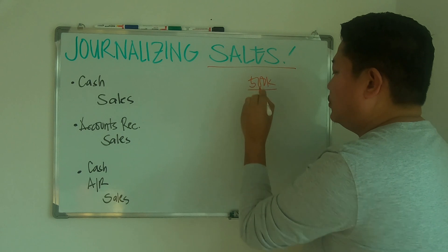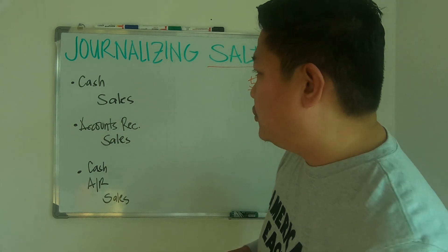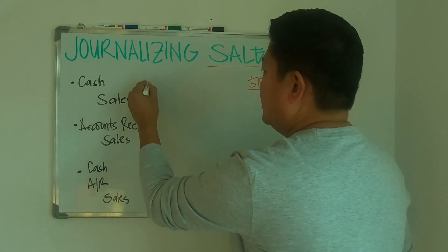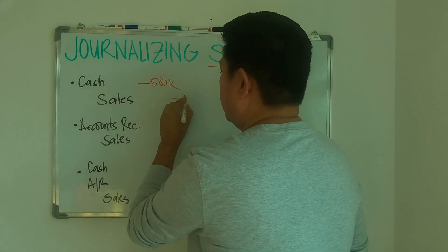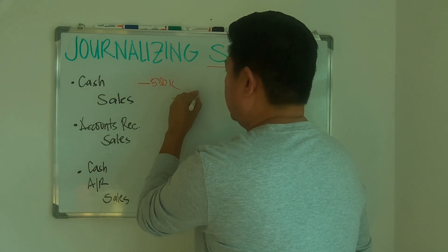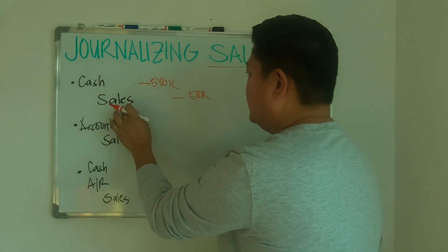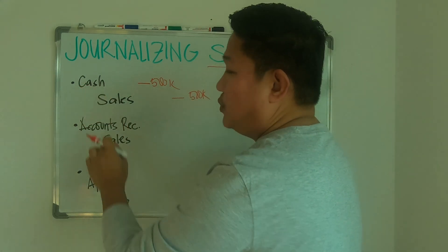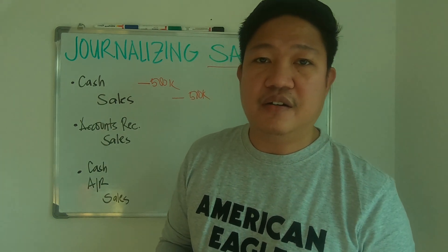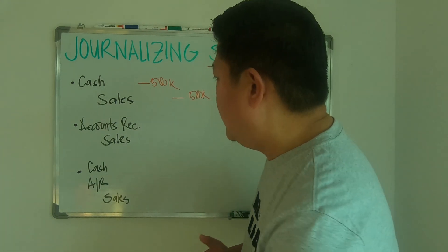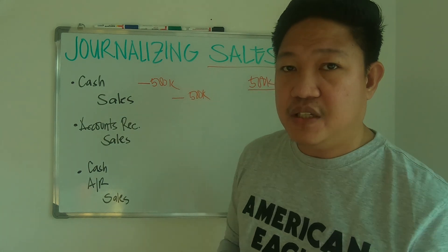If you sold to your customer worth 500,000 worth of merchandise, you have to debit cash of 500,000 and credit sales of 500,000. Cash will be part of your balance sheet under current assets, and sales will be part of your income statement.